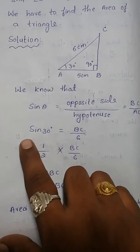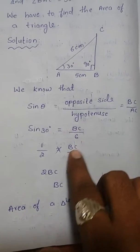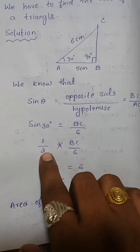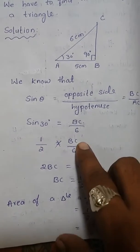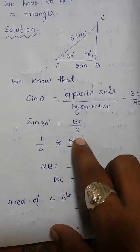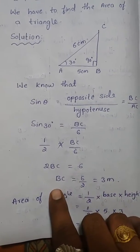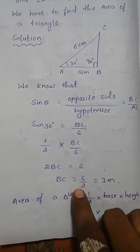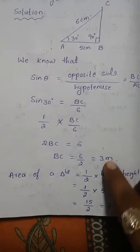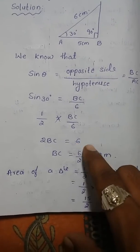The angle is 30 degrees. So sin 30 equals BC divided by AC, and AC is 6. Doing cross multiplication: sin 30 equals 1 by 2, so 1 by 2 equals BC by 6. Cross multiplying gives 2 BC equals 6, so BC equals 6 by 2, which is 3 centimeters. Therefore BC, which is the height of the triangle, equals 3 centimeters.